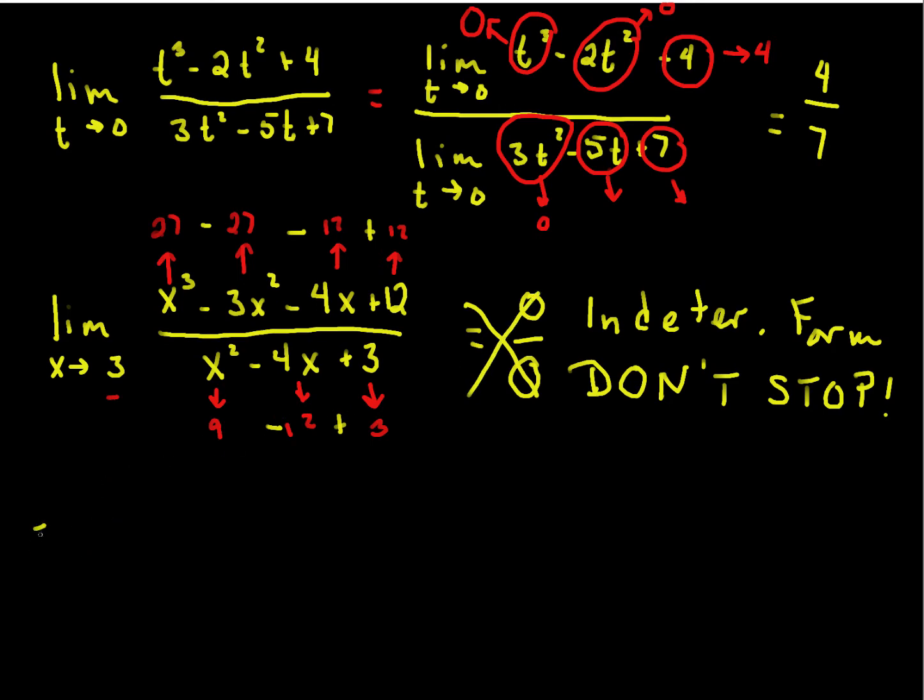So, this is equal to the limit as x approaches 3. Let's see how the top factors. Well, I've got a cubic here, but I see that I've got an x squared, an x cubed here. And I've got a 4 and a 12. So, there's some hopeful things to cancel.